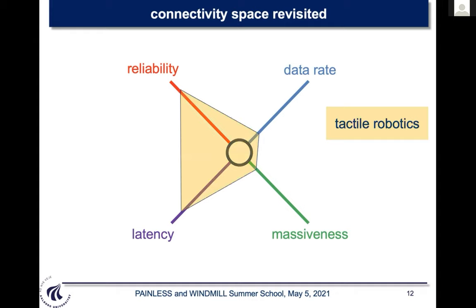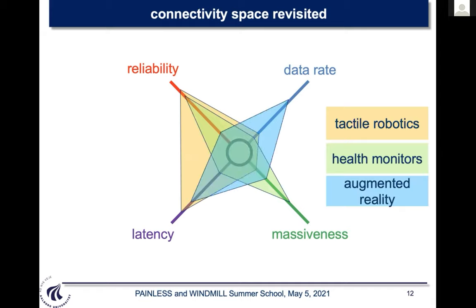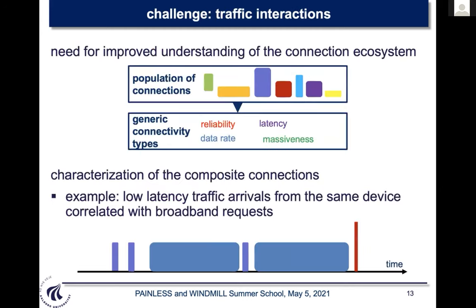Looking at tactile robotics: high reliability, low latency, low data rate, low massiveness — this is URLLC. Health monitors: high reliability, latency not critical, low data rate, high massiveness. Augmented reality: low latency but not mission critical. One key challenge beyond 5G will be how to combine and characterize this composite traffic — understanding how these generic connectivity types are combined to produce more complex communication services.